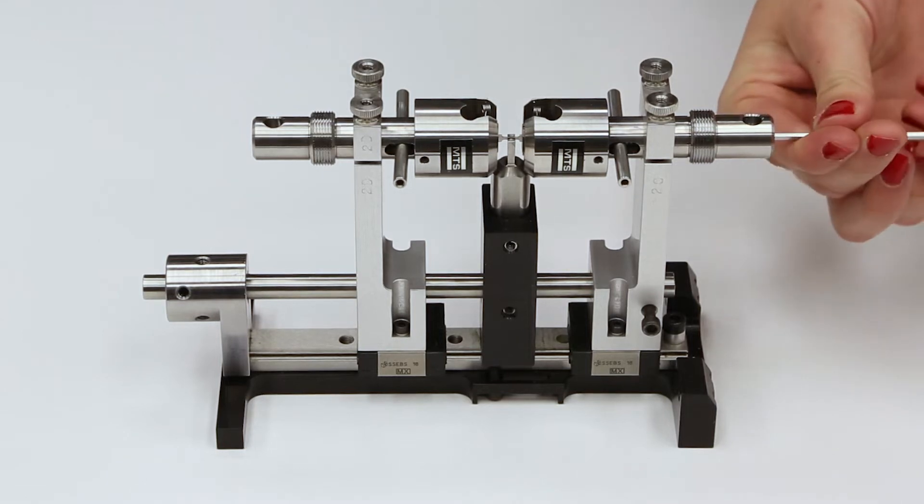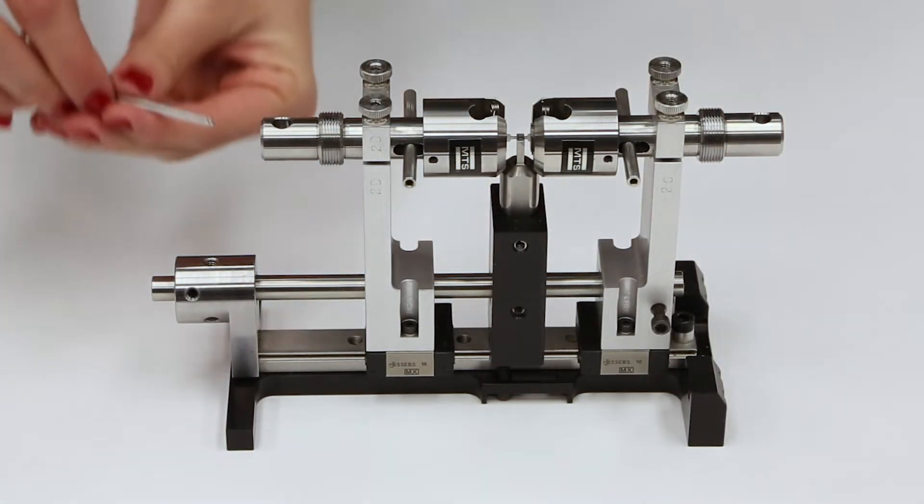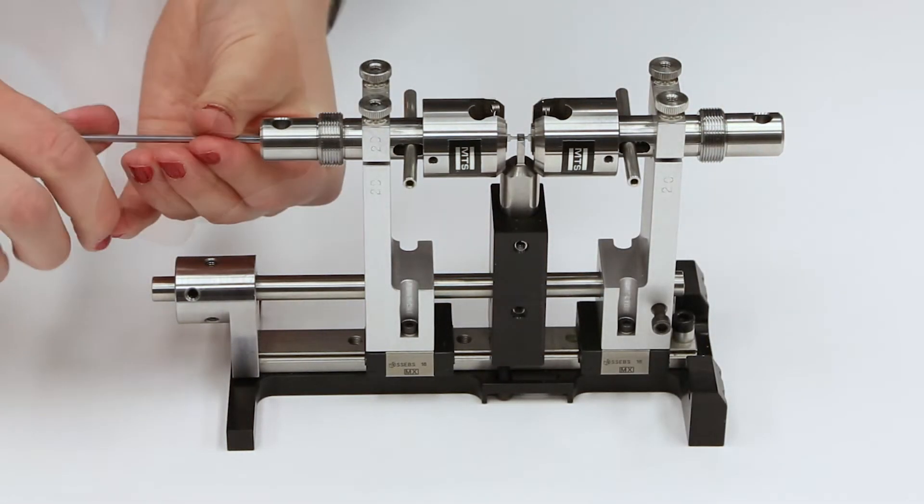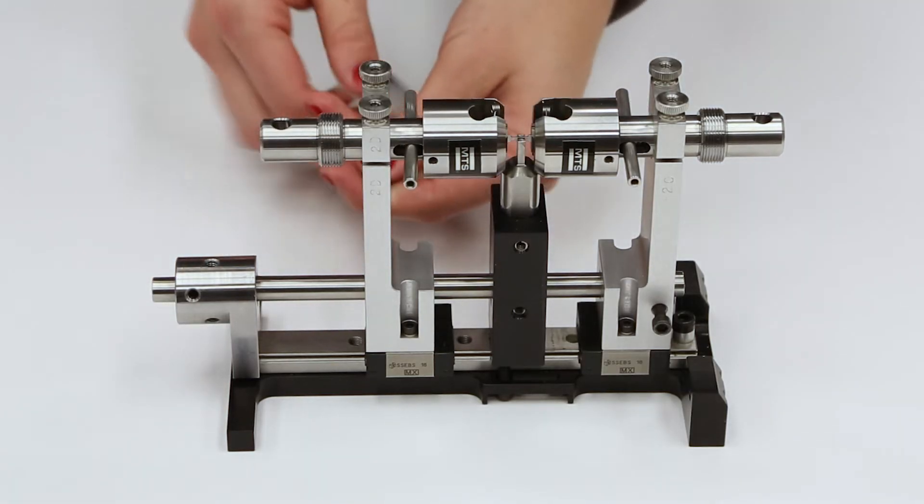Tighten the preload screw on each grip and tighten the locking bridge screws. The specimen is now installed in the grips and it is properly preloaded.